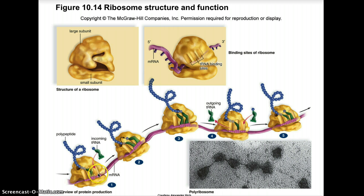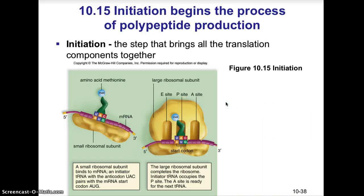When looking at the overall steps of translation in protein synthesis, you have initiation, elongation of the polypeptide chain, and termination. Initiation starts when the start codon AUG comes into play. Elongation occurs as each codon is read, bringing in the corresponding amino acid. Termination occurs when one of the three stop codons comes into place. Initiation is the step that brings all translation components together — the small ribosomal subunit, the large ribosomal subunit, and inside you have three sites: the A site, which is the amino acid site; the P site, which is the polypeptide site where the polypeptide is built; and the E site, which is the exit site.